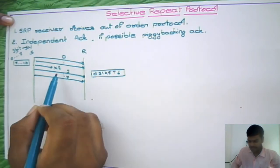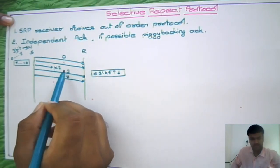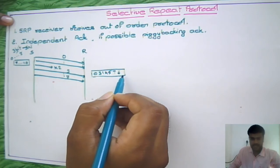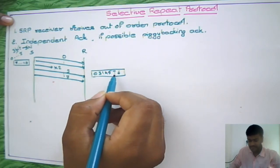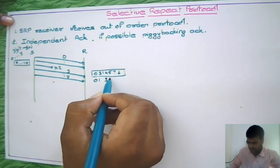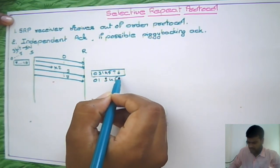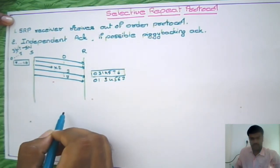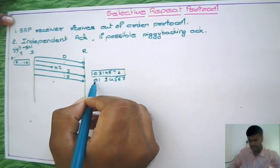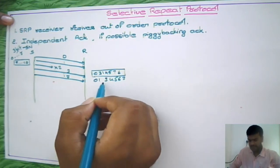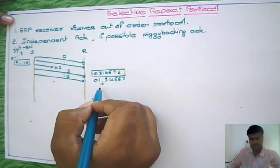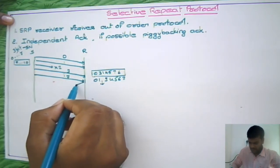Packet number 2 is not received at the destination because it was lost in transit. The receiver is going to sort these packets based on the sequence number: 0, 1, 3, 4, 5, 6, 7. It will then find out if any sequence number is missing in between. Here, the second packet is missing.